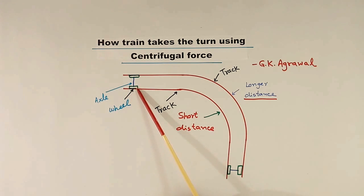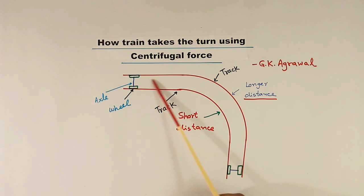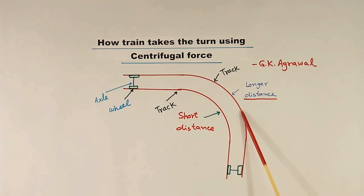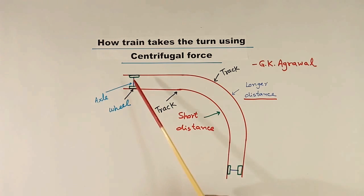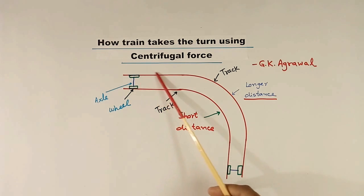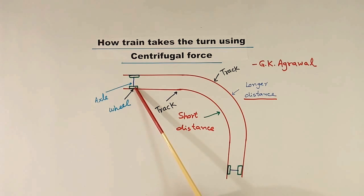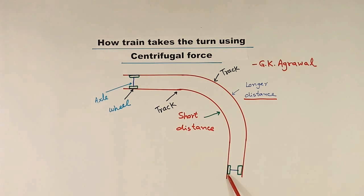These two wheels are of the same size. Now you see, if the train moves here, this distance is longer and this distance is shorter. This means one wheel has to travel a longer distance and another wheel has to travel a shorter distance. How is that possible? That I will explain today.